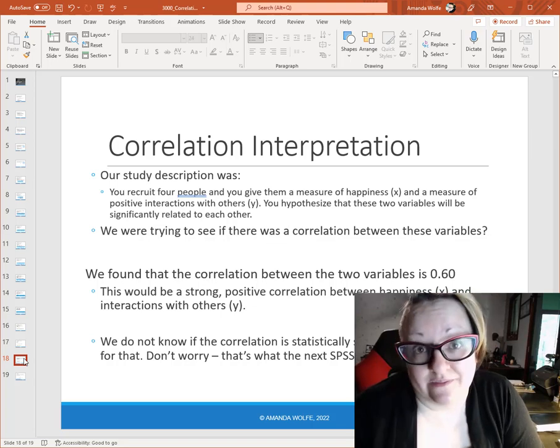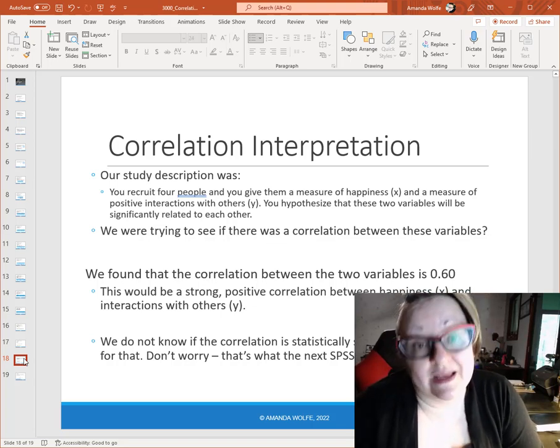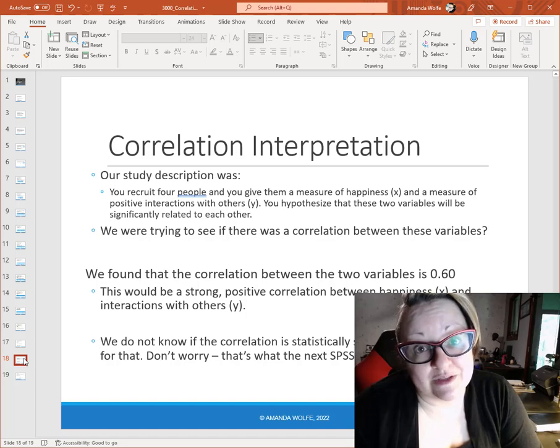Also, .6 means that it's above the .5 Cohen D cutoff, which means it would be labeled as a strong correlation. So this is a strong, positive correlation between happiness and interactions with others. Now, we don't know if it's statistically significant. To do that, we have to take these numbers and plug them into SPSS. That's what your group assignment is going to do for this module. So I hope our calculation video was helpful. Let me know if you get stuck anywhere, and I'll see you online.